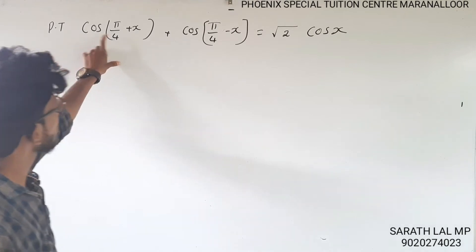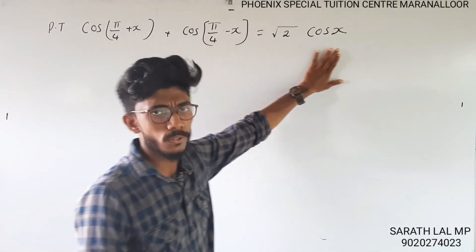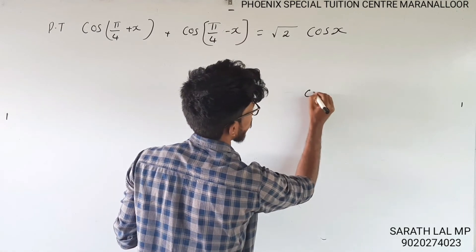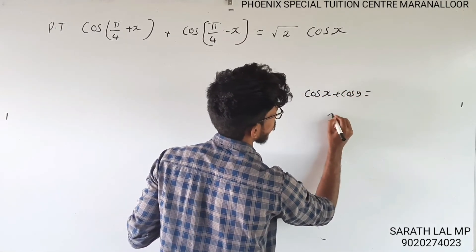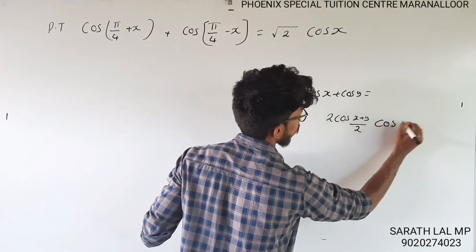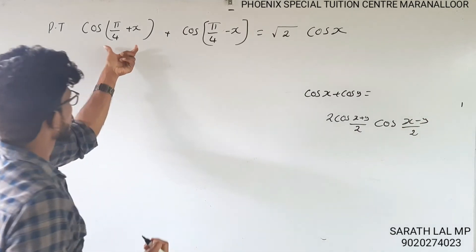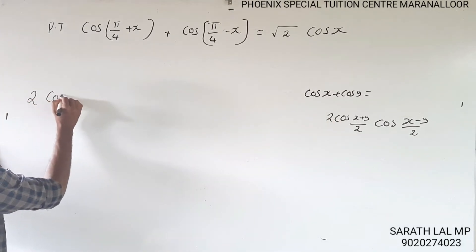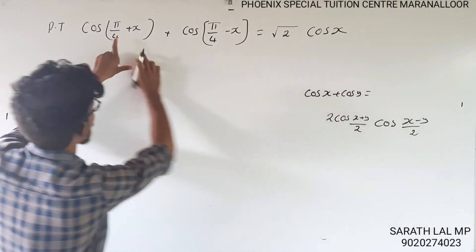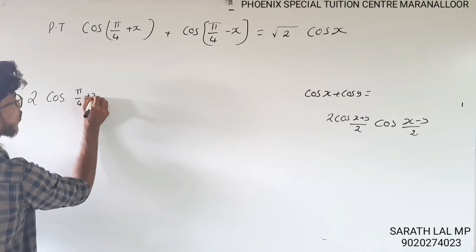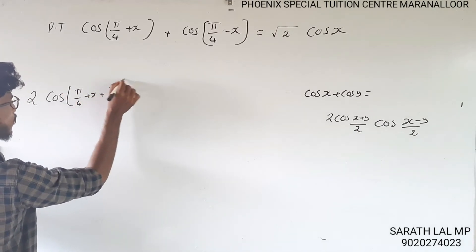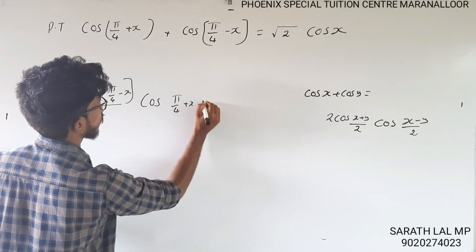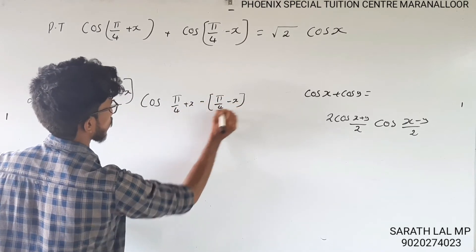Let us prove that cos(π/4 + x) + cos(π/4 - x) = √2·cosx. Using the formula cosx + cosy = 2·cos((x+y)/2) · cos((x-y)/2), let x = π/4 + x and y = π/4 - x. Then (x+y)/2 = (π/4 + x + π/4 - x)/2 = (2π/4)/2 = π/4, and (x-y)/2 = (2x)/2 = x.